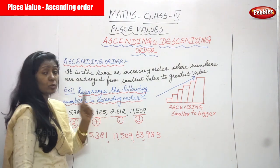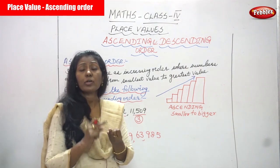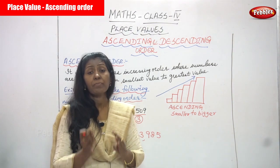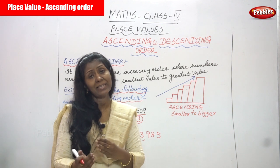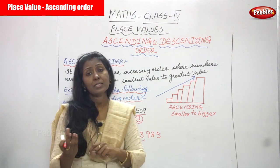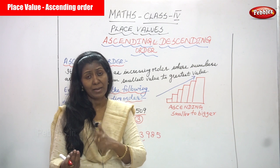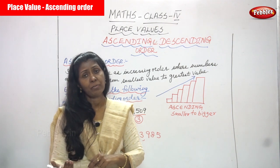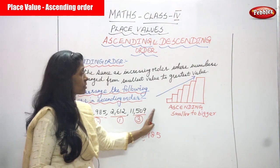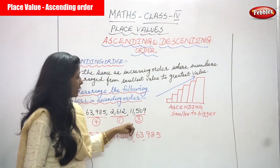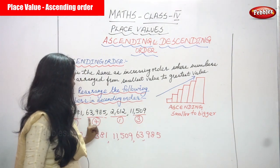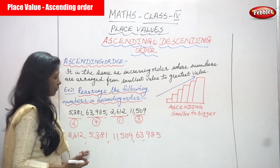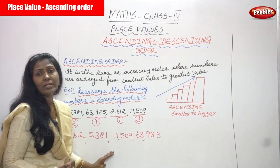First find out the digits, second compare the digits of the same digit count. Comparing the four-digit numbers: 2612 is smallest — first priority; 5381 is second priority. Comparing the five-digit numbers: 11509 is smallest — third priority; 63985 is the greatest number — fourth priority. So the ascending order is: 2612, 5381, 11509, 63985. This is the ascending order method.